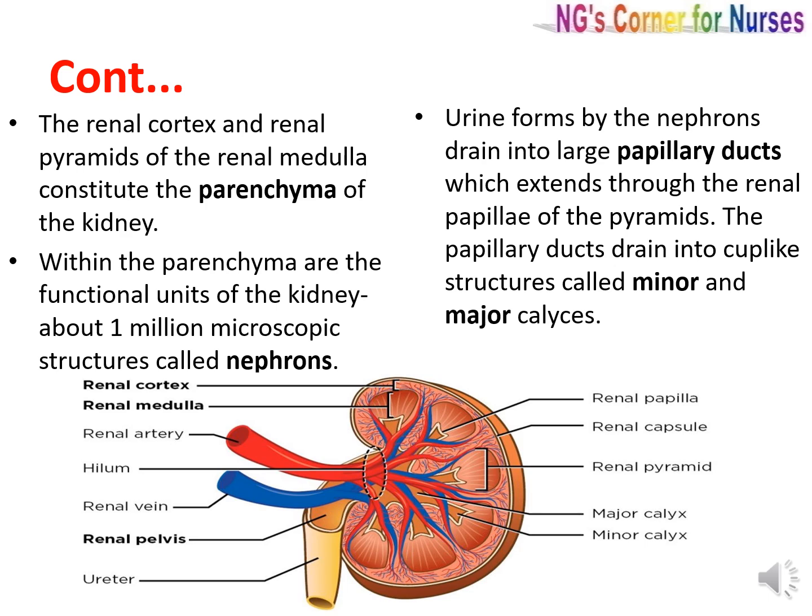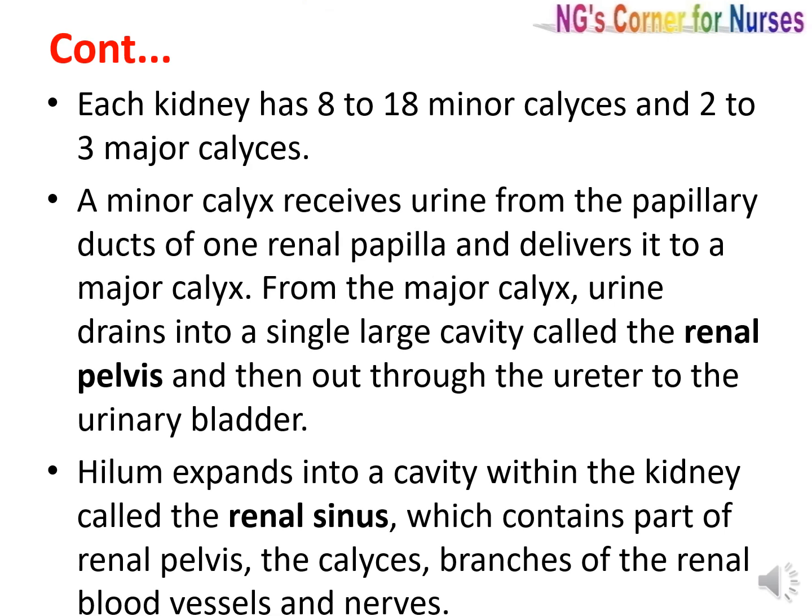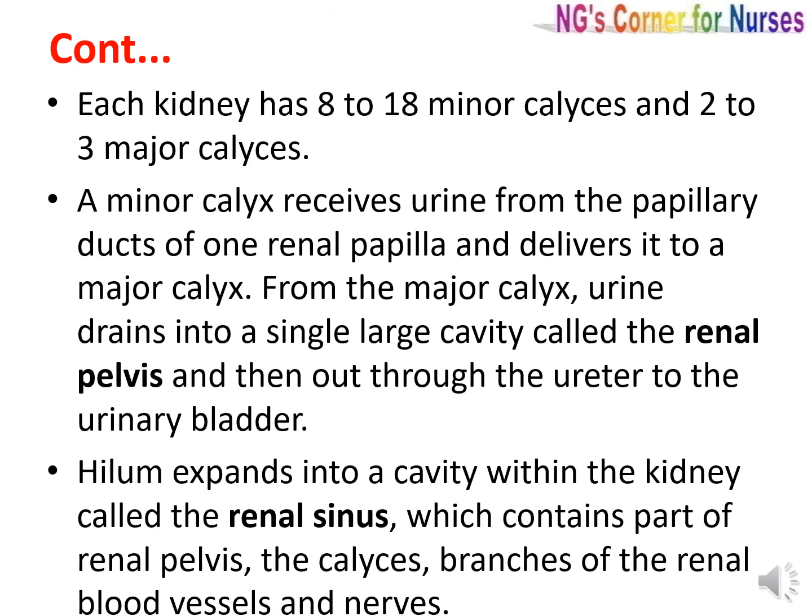The papillary ducts drain into cup-like structures called minor and major calyces. Each kidney has 8 to 18 minor calyces and 2 to 3 major calyces. A minor calyx receives urine from the papillary ducts of one renal papilla and delivers it to a major calyx. From the major calyx, urine drains into a single large cavity called the renal pelvis, and then out through the ureter to the urinary bladder. The hilum expands into a cavity within the kidney called the renal sinus, which contains part of the renal pelvis, the calyces, branches of the renal blood vessels, and nerves.